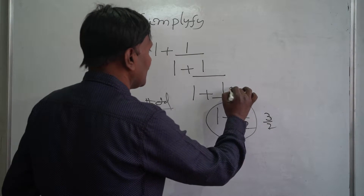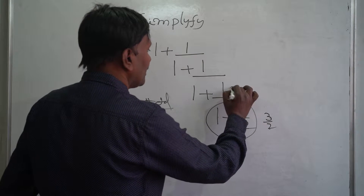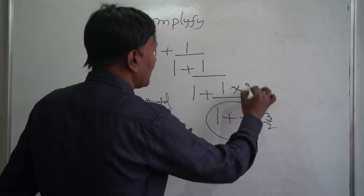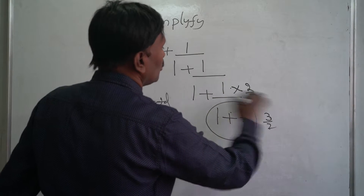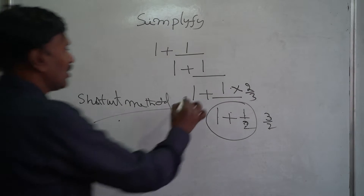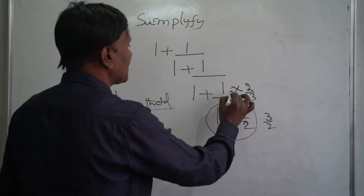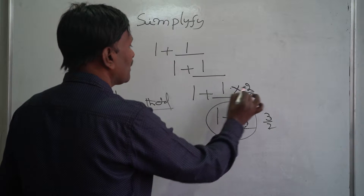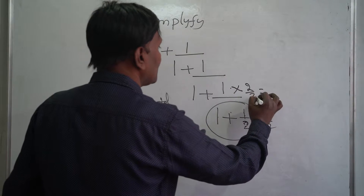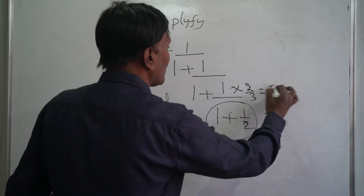If 3 by 2 comes up here, it will multiply — becoming 2 by 3. So here 1 plus 2 by 3: that means 3 plus 2 is 5, so the result is 5 by 3.